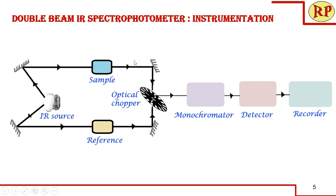Now we will look into the instrumentation part of the double beam IR spectrophotometer — we should not confuse this with FTIR, as this is a different dispersive instrument. An IR source is present here; we can use a Nernst glower, Nichrome coil, or Globar silicon carbide. In all cases, when heated between 200 to 1,200 degrees centigrade, IR radiation is produced. In this double beam design, a double beam is generated and one beam passes through the sample and the other through the reference.